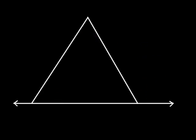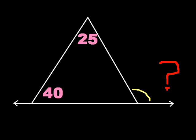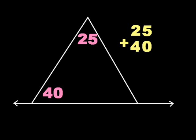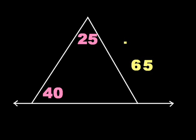Okay, let's solve another problem. Here's another given. What is the measurement of the exterior angle? Let's solve it. 25 plus 40 is equal to 65. Therefore, the measurement of the exterior angle is 65.